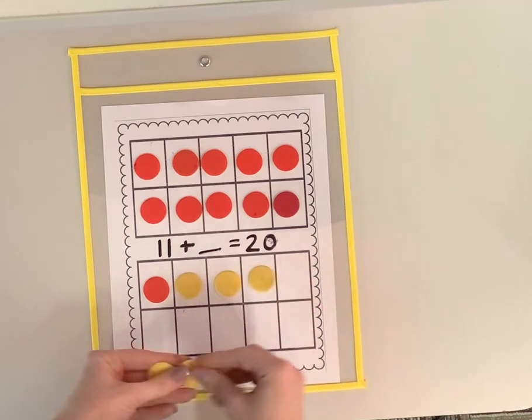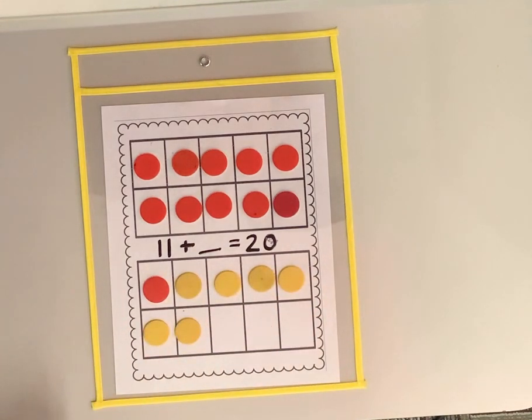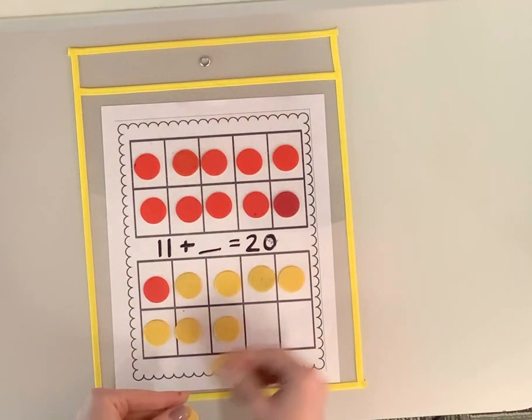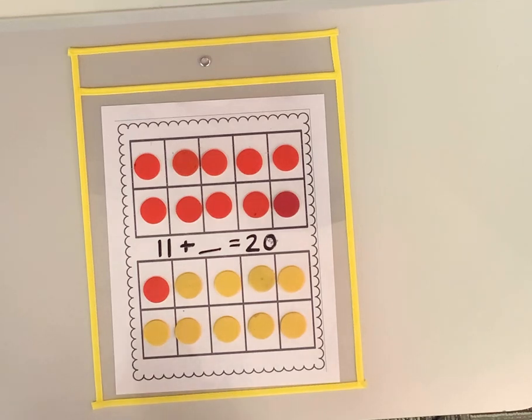13, 14, 15, 16, 17, 18, 19, 20. There we go. I have two full tens frames, which makes 10, 20.